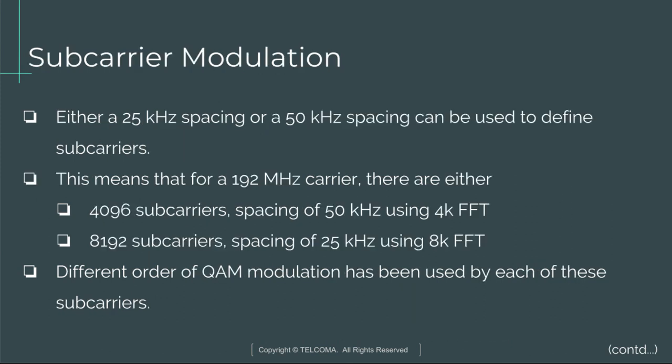Sub-carriers can be defined using either 25 kHz spacing or 50 kHz spacing. For a 192 MHz carrier, this means either 4096 sub-carriers at 50 kHz spacing using 4K FFT, or 8192 sub-carriers at 25 kHz spacing using 8K FFT. Each of these sub-carriers uses a different order of QAM modulation.